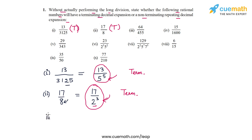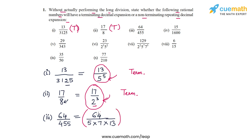The third number is 64/455. Now 455 can be prime factorized as 5 × 7 × 13. This rational number is in its lowest form since there is no common factor between the numerator and denominator. The denominator has prime factors other than twos and fives — it has 7 and 13 — so the decimal expansion of 64/455 will be non-terminating and repeating.